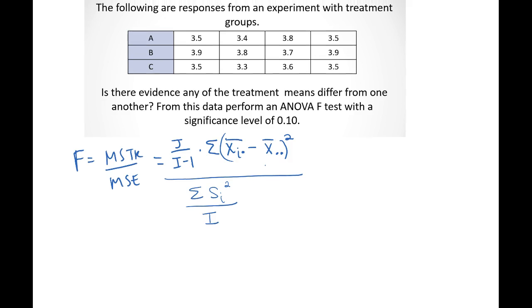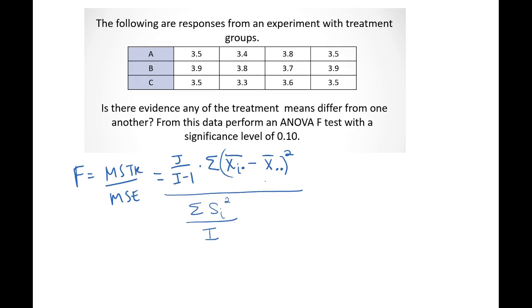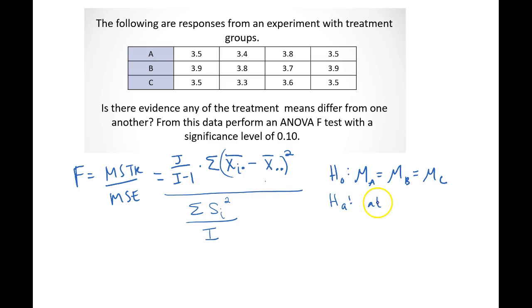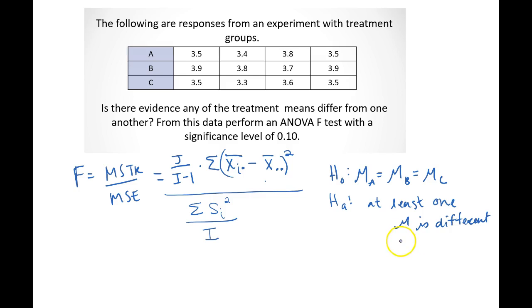So we can calculate the F test statistic this way. First, what is our null and alternative hypothesis for the F test? Our F test always tests equality of means, so the null is: mu A equals mu B equals mu C. The alternative is that at least one mu is different from the others.